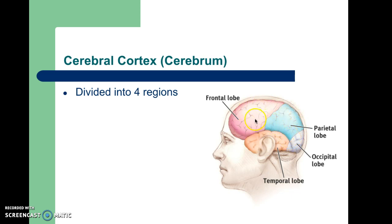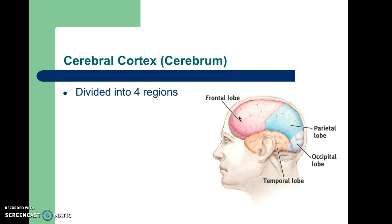When we talk about the cerebral cortex, because there's so much real estate here, we divide it into four different areas to help localize whatever structure or ability we're talking about — not because there's something fundamentally different about the frontal lobe compared to the parietal lobe. They do have different specialized functions, but you wouldn't be able to tell just by looking.